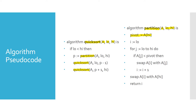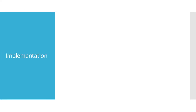The partition method loops through all elements of the array and compares each with the pivot. If the element is less than the pivot, it is swapped and moved to the left; if greater, it is moved to the right. Finally, the pivot element is returned to the quicksort routine, which calls itself recursively on both sub-arrays to sort them.